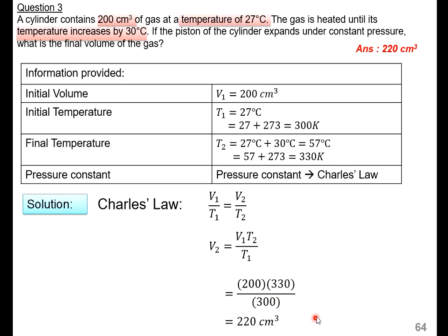Easy, isn't it? Identify the information, list it out, identify what is not mentioned or what is constant, then use the formula. Remember when doing working: please make sure that you rearrange the formula to make the unknown the subject first before substituting values. It will reduce careless mistakes when using your calculator.